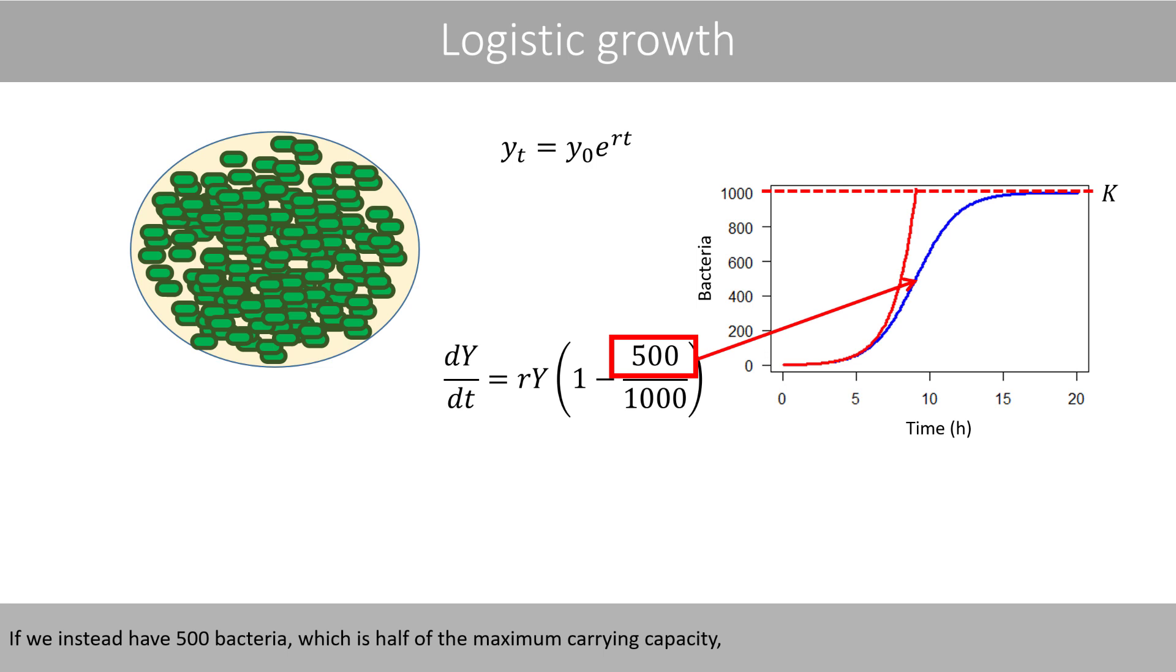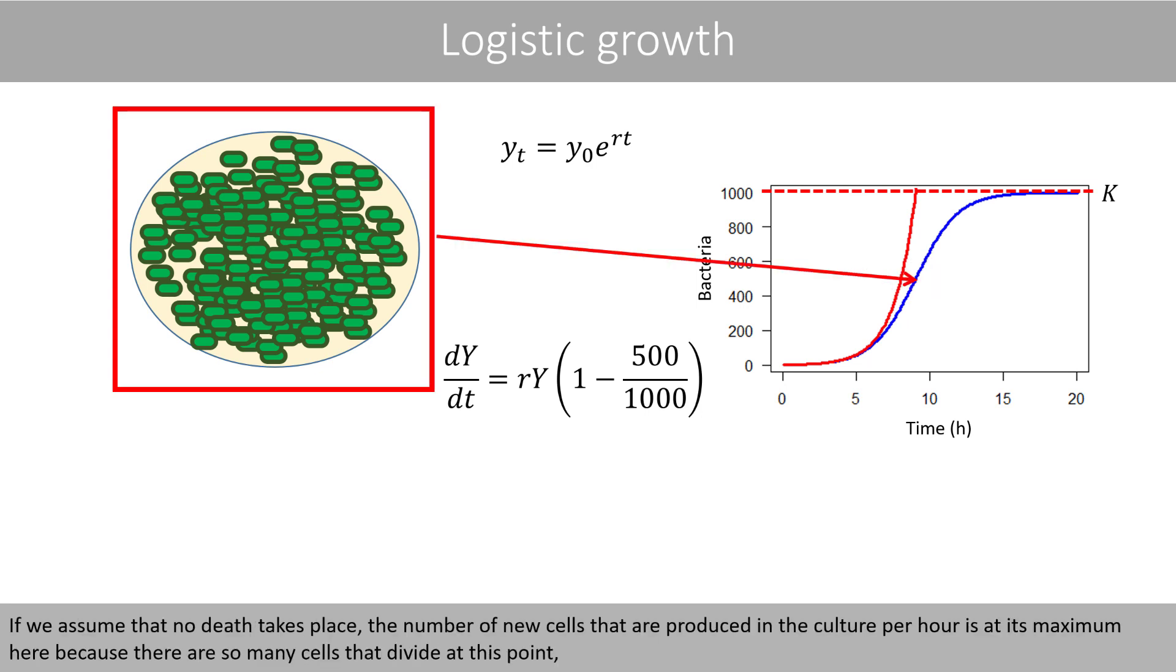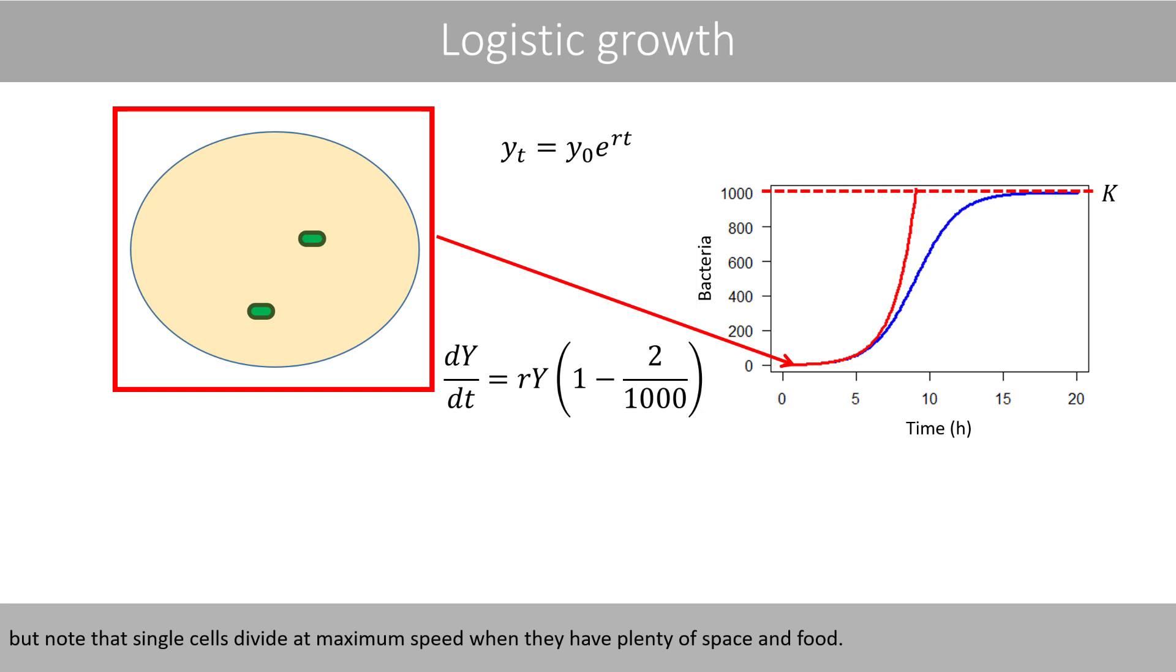If we instead have 500 bacteria, which is half of the maximum carrying capacity, the value within the brackets is 0.5, which means that the bacteria divide at half maximum speed if we assume that no death takes place. However, since the curve is steepest here, this means that the total population grows at maximum speed. If we assume that no cell death takes place, the number of new cells that are produced in the culture per hour is at its maximum here, because there are so many cells that divide at this point. But note that single cells divide at maximum speed when they have plenty of food and space.